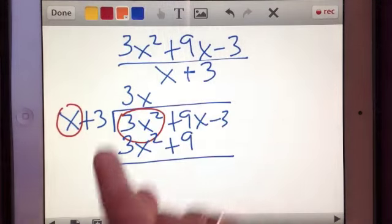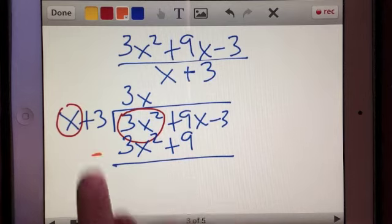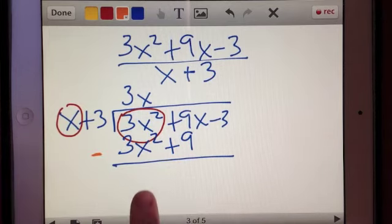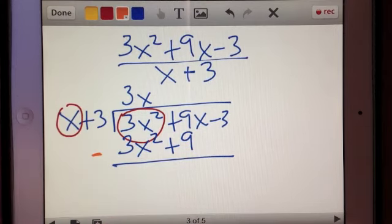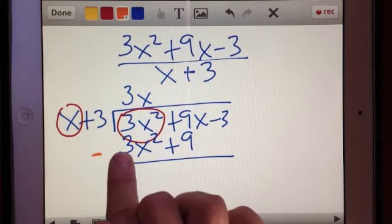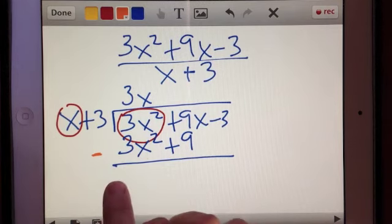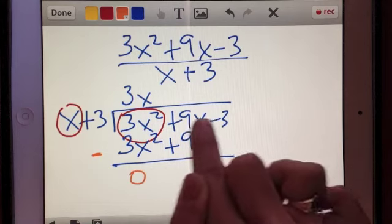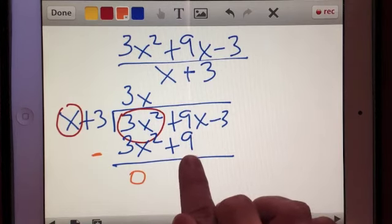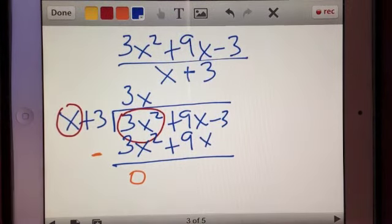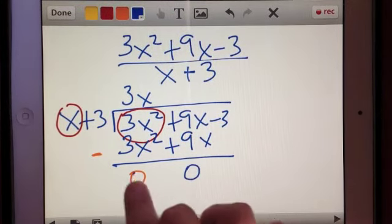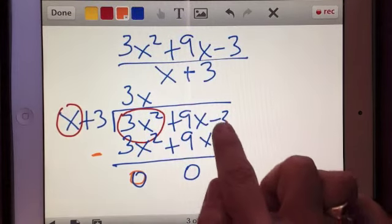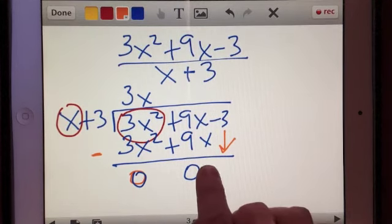And then I would subtract, and notice that I put the subtraction symbol out here. When we're subtracting terms that have a negative sign in it, it can get very confusing. I keep it out here because I don't want to get confused with this term. 3x squared minus 3x squared, that's going to get me 0. 9x minus 9x would also get me 0. I still have something left over, so I'm going to bring that down, and that gets me negative 3.